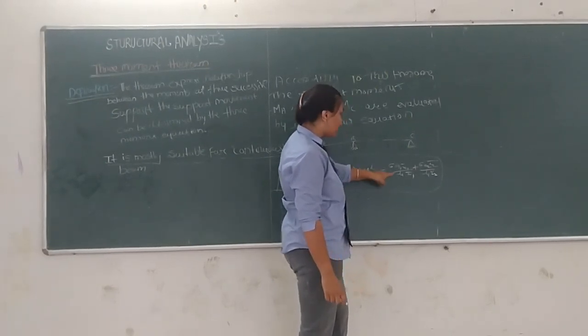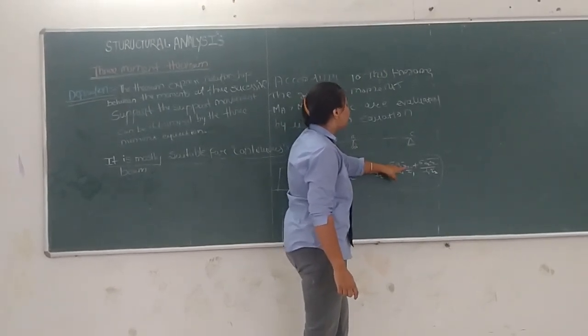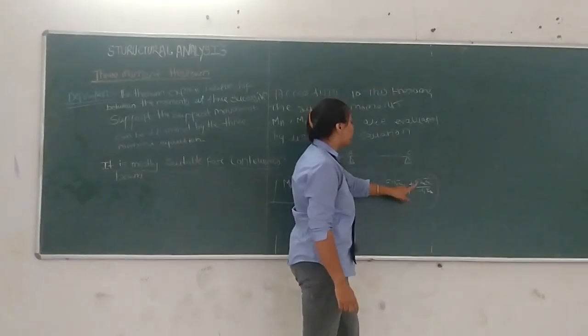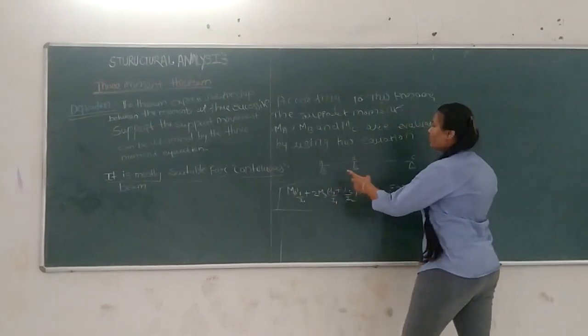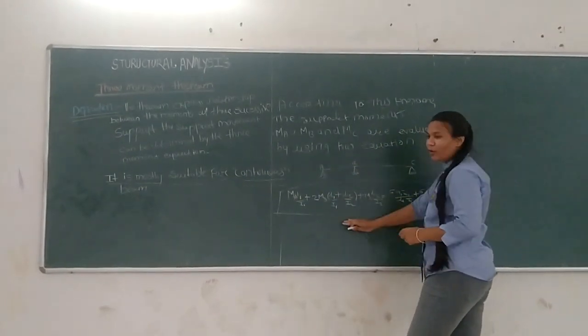6 A-1 X-1 bar upon L-1 I-1 plus 6 A-2 X-2 bar upon L-2 I-2. This is the equation of three moment theorem that I will use for the problem. Thank you.